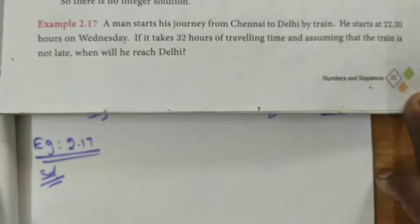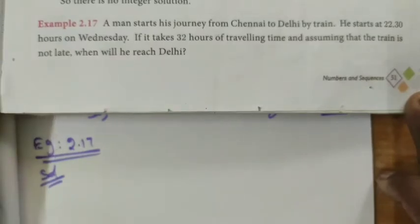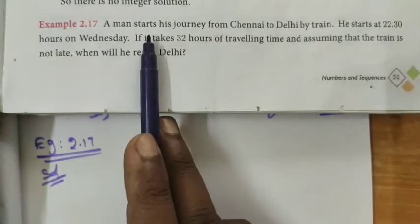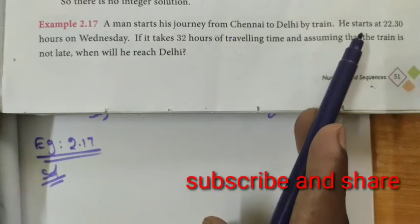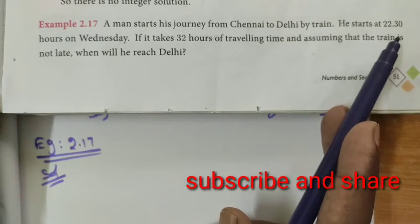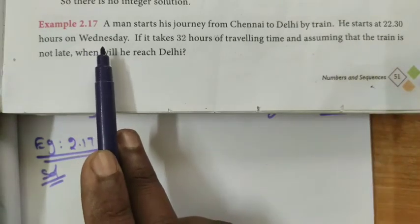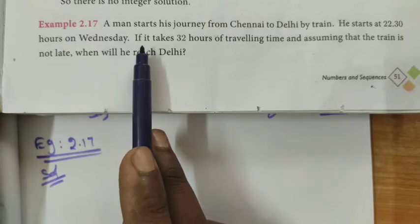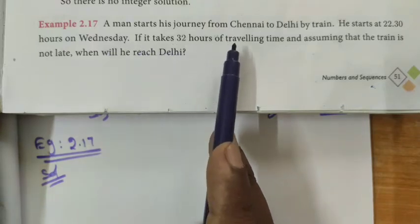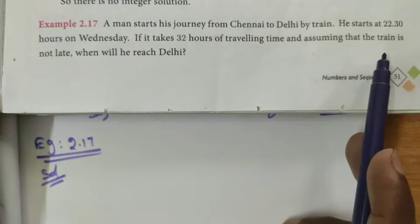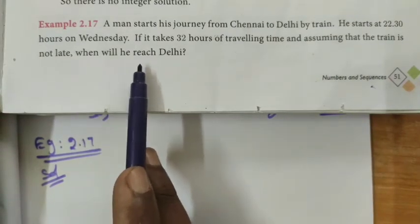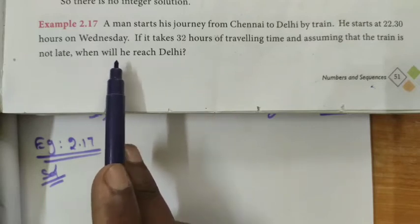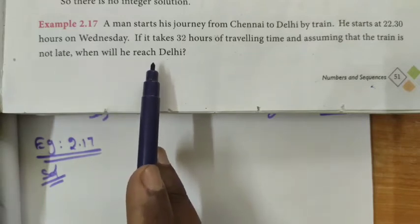Class 10, Chapter 2, Example sum 2.17. A man starts his journey from Chennai to Delhi by train. He starts at 22:30 hours on Thursday. It takes 32 hours of traveling time, assuming the train is not late. When will he reach Delhi? We have to find the time and the day.